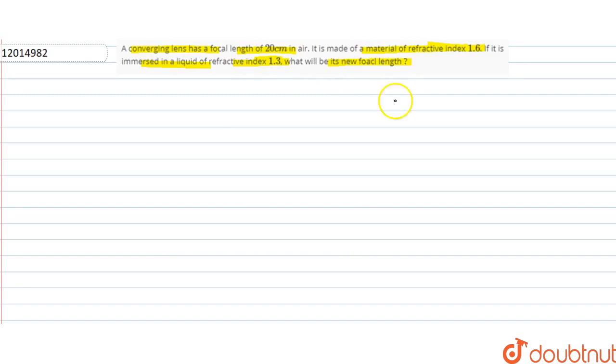We are asked for the new focal length. The formula is 1/f equals mu relative minus 1, times 1/r1 minus 1/r2. So 1/f equals mu relative 1.6. This is 1.6 minus 1 into 1/r1 minus 1/r2. We have alpha.